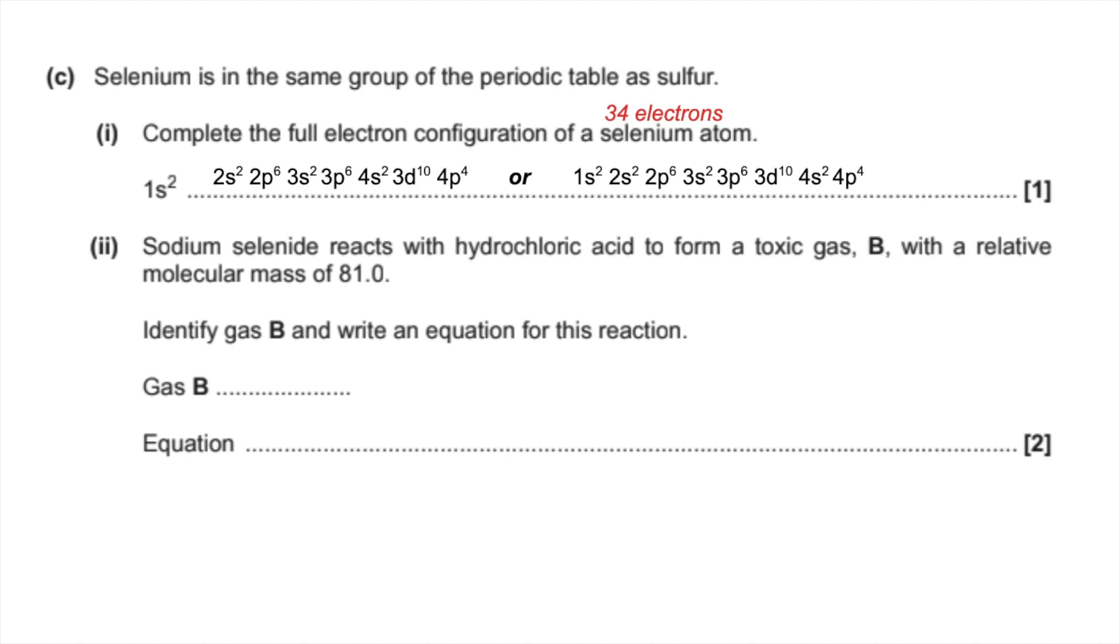So for the final part of the question, we've got to use this information to come up with the identity of gas B and the equation. We don't have to explain anything. I'm going to give you the logic to where the answer's coming from, but you don't have to for the purpose of the exam. So the first thing is, we'll be using this information. Selenium's in the same group of the periodic table as sulfur. Obviously, we didn't need to be told that. The periodic table tells us that anyway. So sodium selenide is going to have the same sort of type of formula as sodium sulfide, which the question started off talking about.